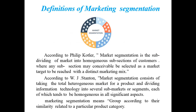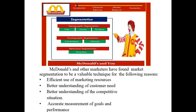As per Philip Kotler, market segmentation is the subdividing of a market into homogeneous groups or sections of customers, where any subsection may conceivably be selected as a market target to be reached with a distinct marketing mix. According to W.J. Stanton, market segmentation consists of taking the total heterogeneous market for a product and dividing it into several sub-markets or segments, each of which tends to be homogeneous in all significant aspects. In summary, we group consumers according to their similarity related to a particular product category.